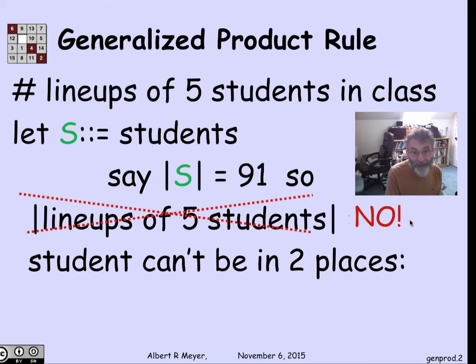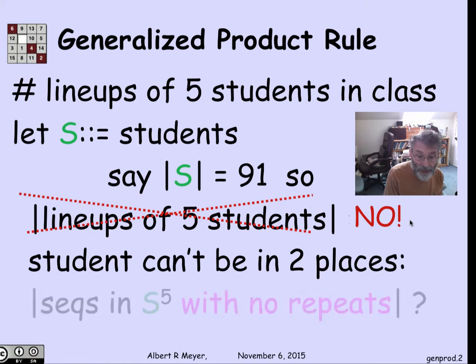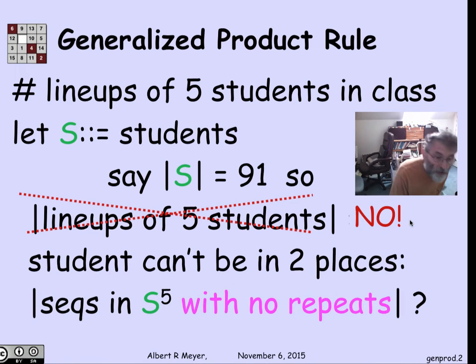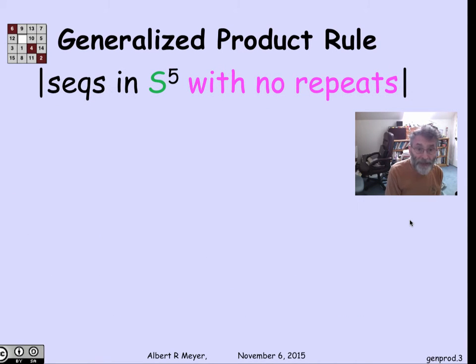In fact, when we line up the students, we're counting up a line of five different students among the 91. We really want the number of sequences of length five from the set S of students, but with no repeats. How do I count that?